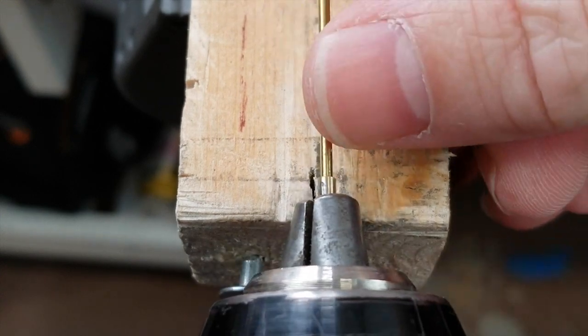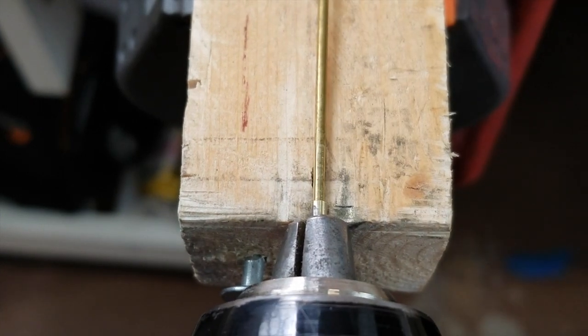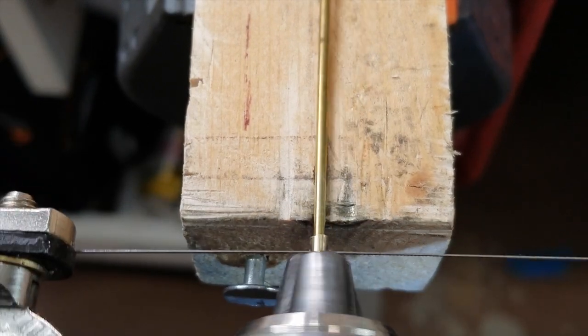Now the last video I showed you how to make the eyelets for the shock. This is the same method here. You're just going to make the eyelets a little wider at this time.